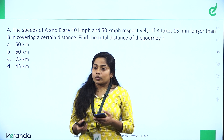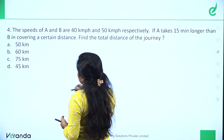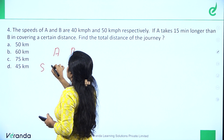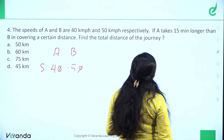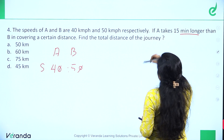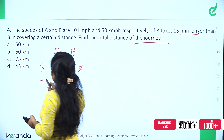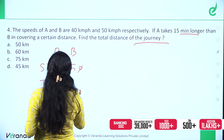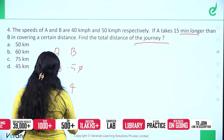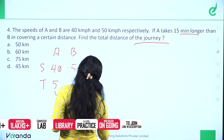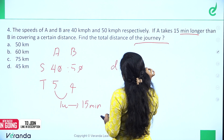Let's go to the next question. The speeds of A and B are 40 km/h and 50 km/h. If A takes 15 minutes longer than B in covering a certain distance, find the total distance of the journey. Speed ratio A : B = 40 : 50 = 4 : 5, so time ratio = 5 : 4.